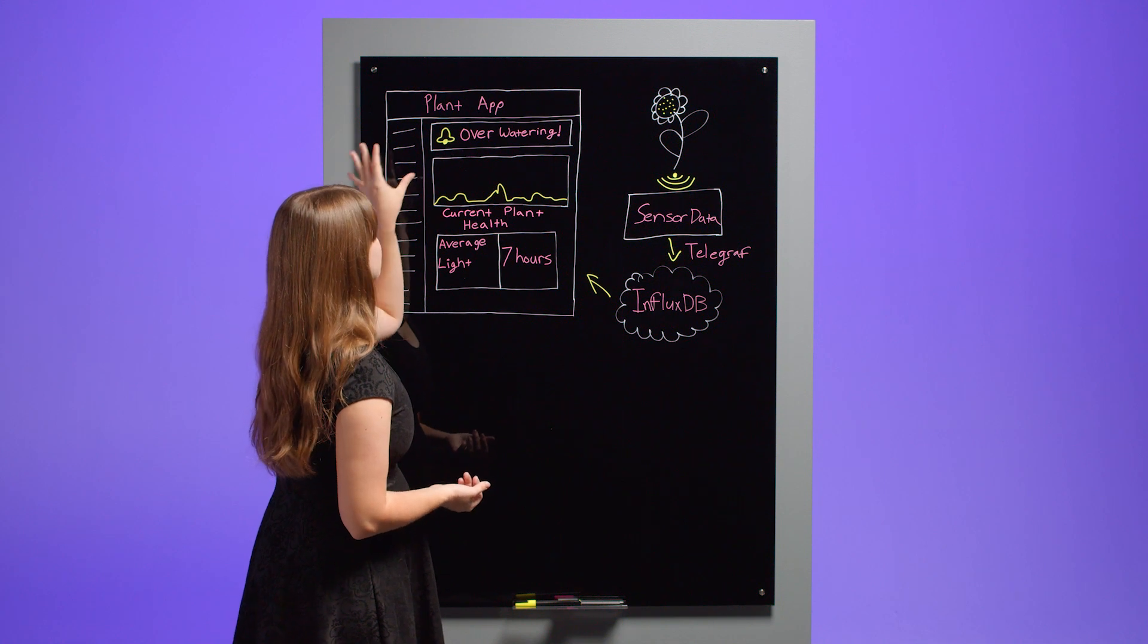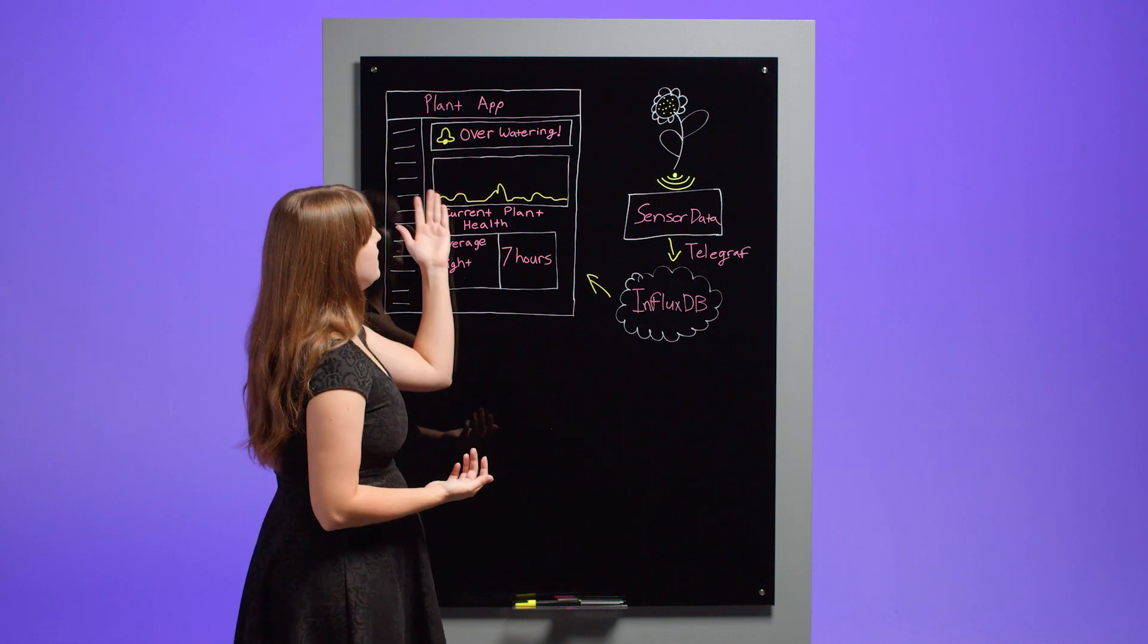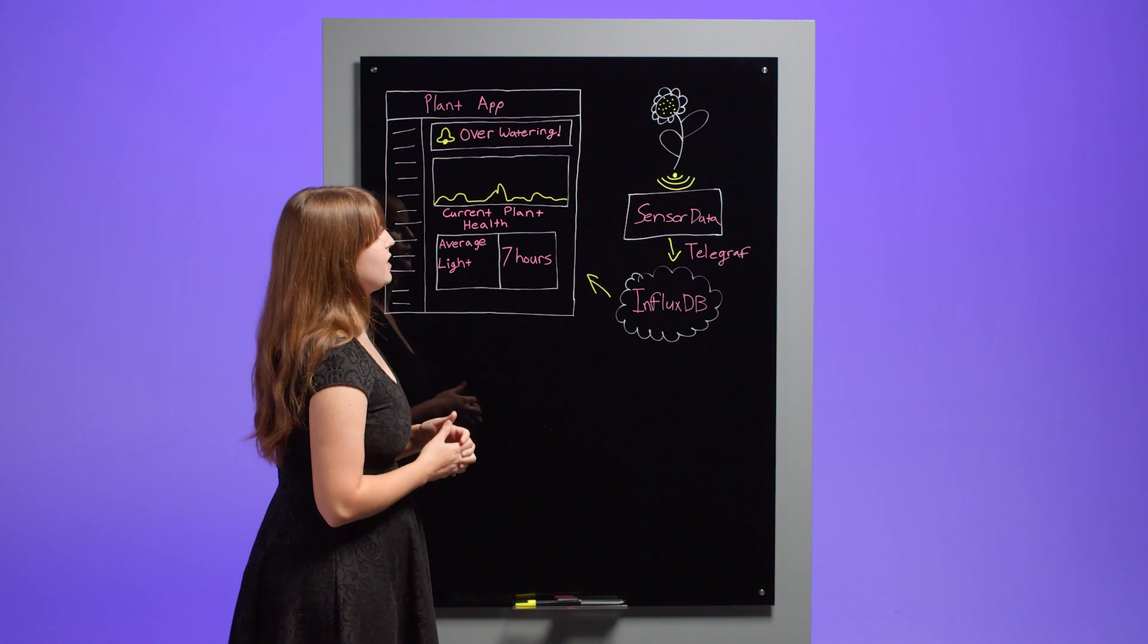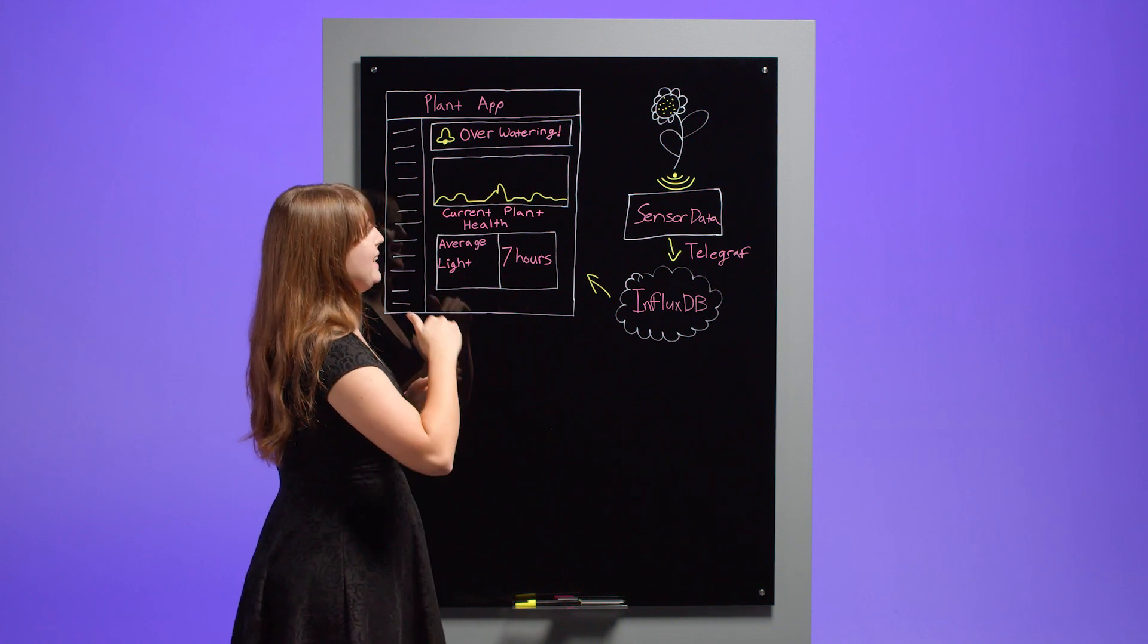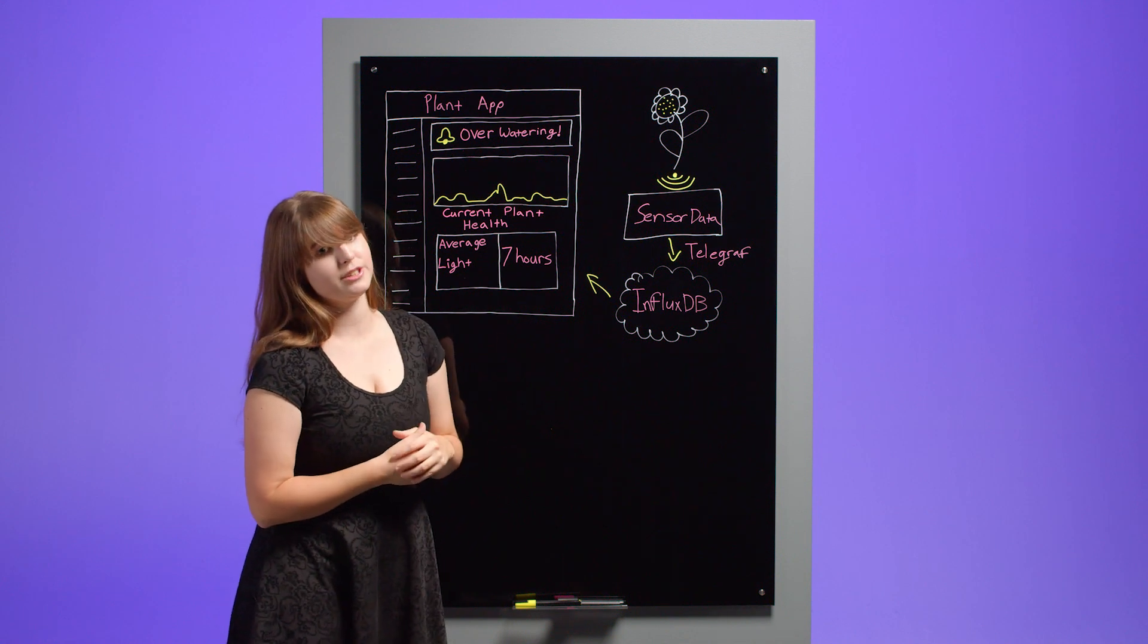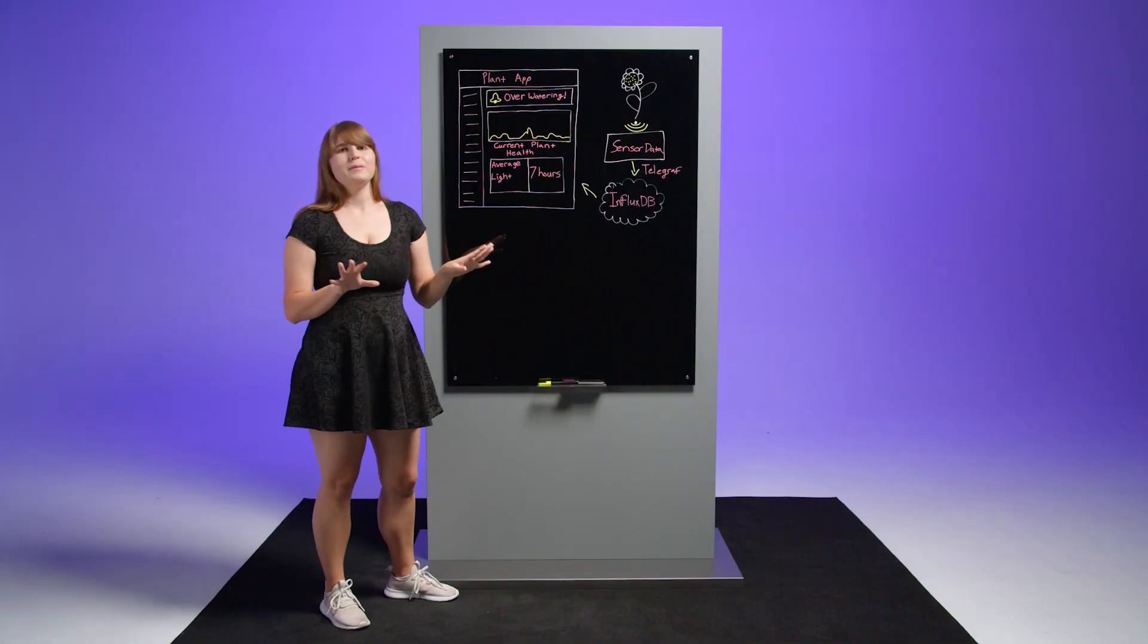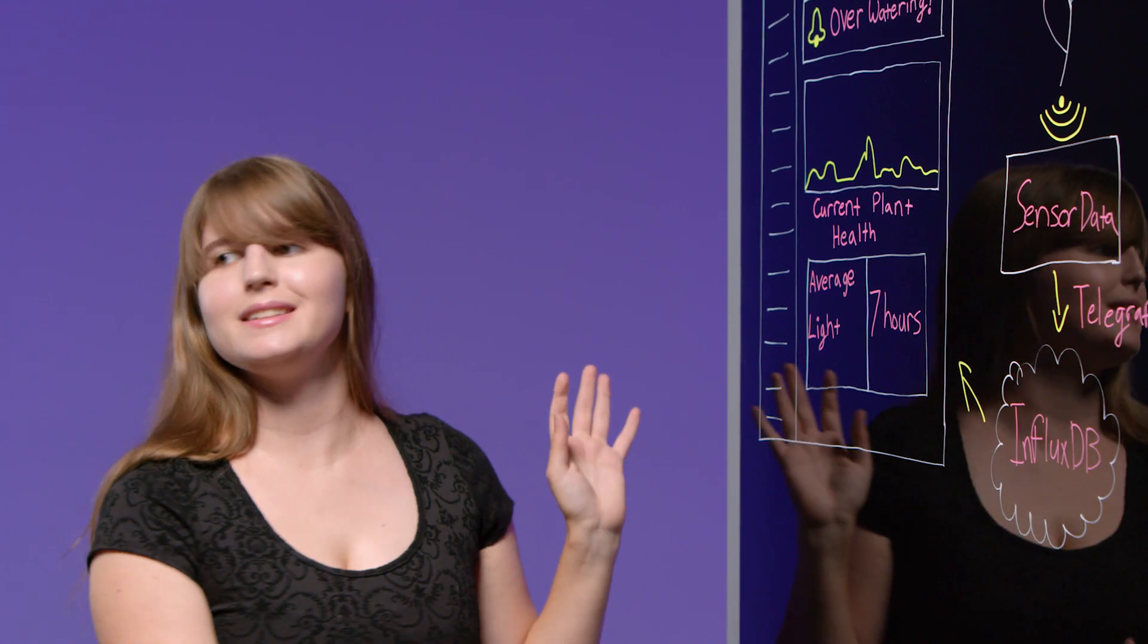Finally, we also have our alerts and monitoring system, which is set up with a threshold. So for this one, I'm using my moisture sensor. And when it reaches a certain threshold and stays at that threshold for too long of a time, meaning you've over-watered your plant, I go ahead and send an alert to let you know, cool it on the watering. And yes, this is my PlantBuddy system.